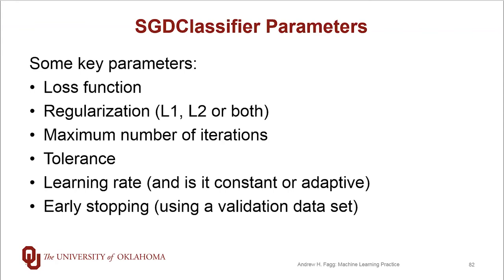The tolerance parameter allows you to control early stopping of the learning process. In particular, what it does is measure the magnitude of the gradient being computed. And once that magnitude reaches a low enough value — meaning the error surface starts to get very flat — that's going to cause the learning algorithm to terminate early, assuming you're using tolerance.